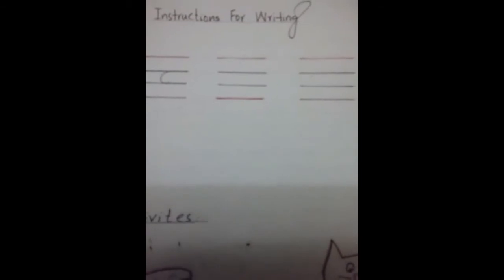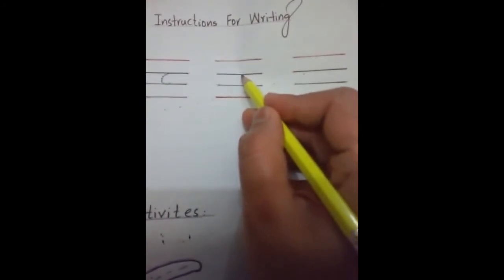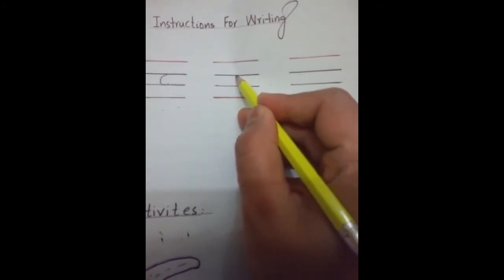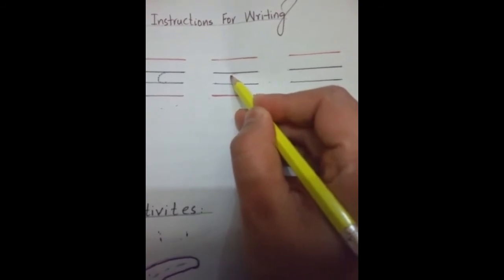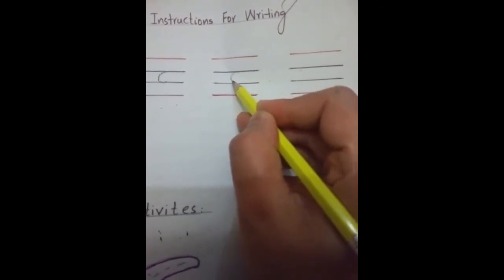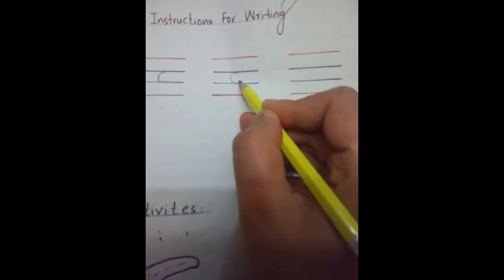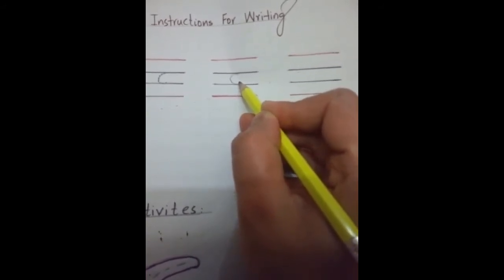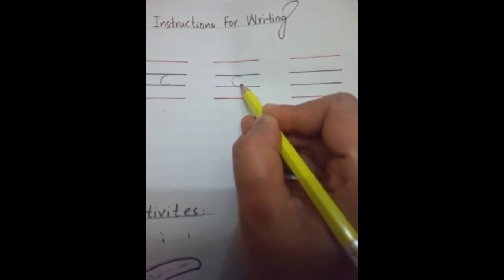First of all, you will take start from the middle line. Now you will join the dots in the proper way, touch the baseline, and make an anti-clockwise half circle — just like an anti-clockwise half circle. Now I will write this letter without dots.